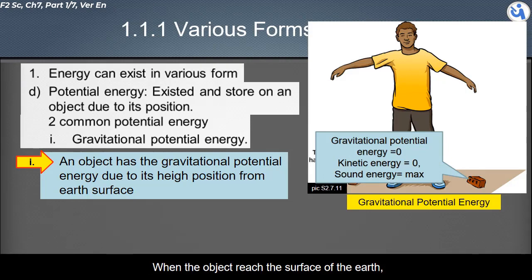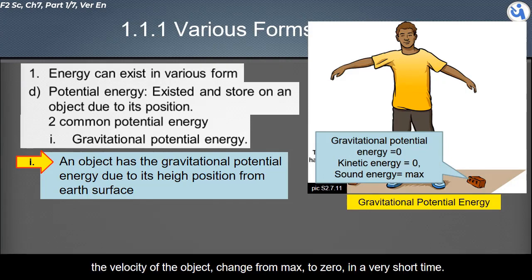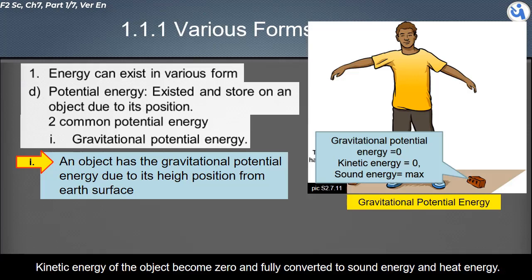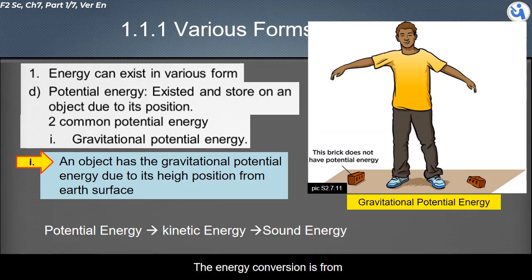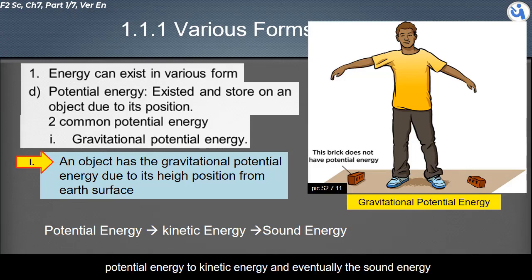When the object reaches Earth's surface, its velocity changes from maximum to zero in a very short time. The kinetic energy of the object becomes zero and is fully converted into sound energy and heat energy. The overall energy conversion is from potential energy to kinetic energy, and eventually to sound energy.